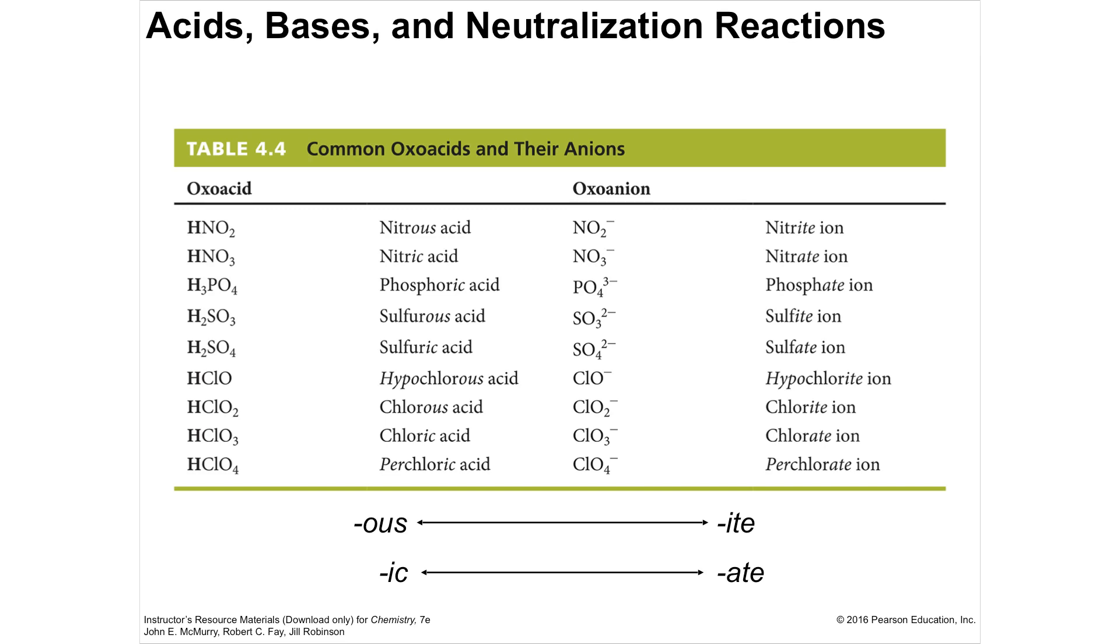And then here are the different types of acids that we saw, the ite nitrous goes to nitric, or I'm sorry, nitrite goes to nitrous, sorry about that, nitrite goes to nitrous, ate goes to ic, so phosphate goes to phosphoric, perchlorate goes to perchloric, it's just a review of your names, which we've done before, you can go back and check out that video.